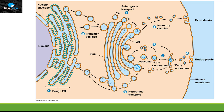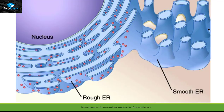This picture shows how proteins are transported into different sub-organelles. This is the rough endoplasmic reticulum, and these green dots are basically the ribosomes that are going to translate the protein inside the ER. From there, the protein will bud off from the endoplasmic reticulum and then be transported into the Golgi apparatus, lysosome, endosome, secretory vesicles, and even outside the cell.